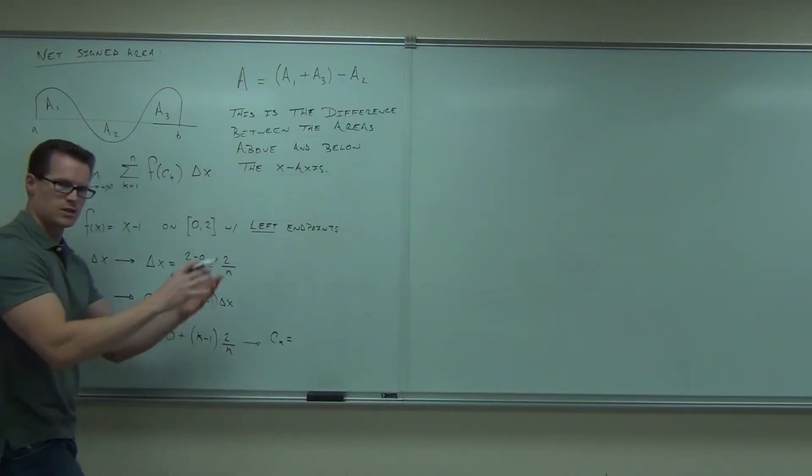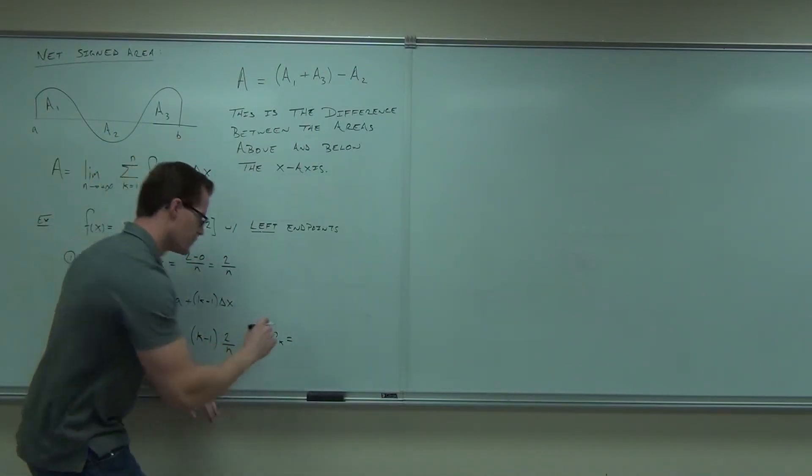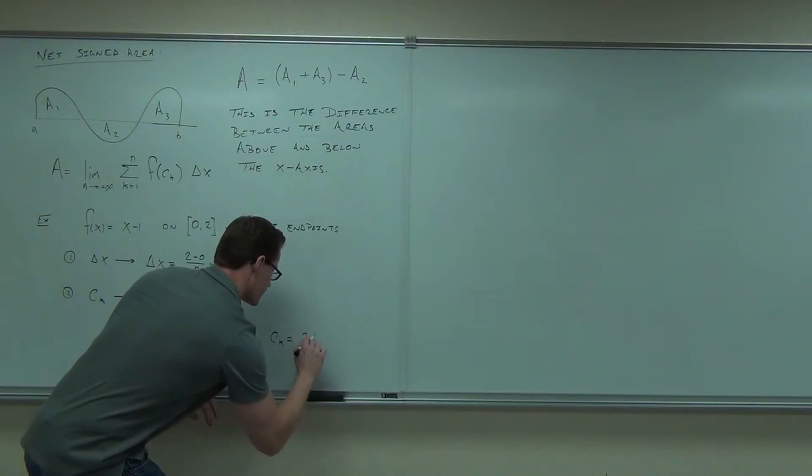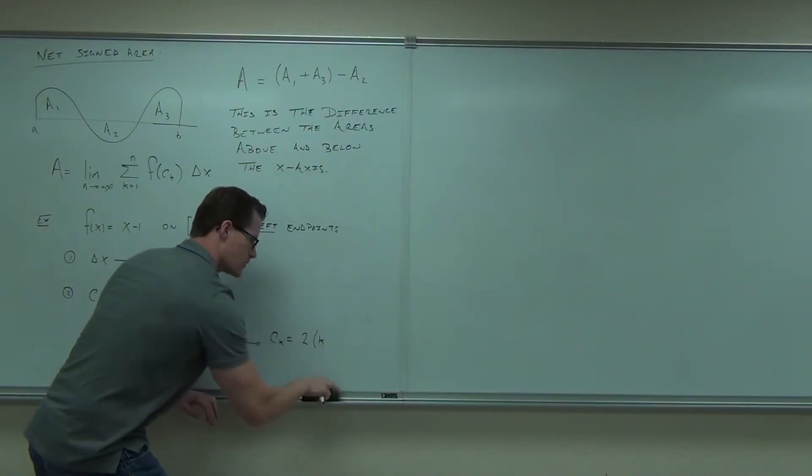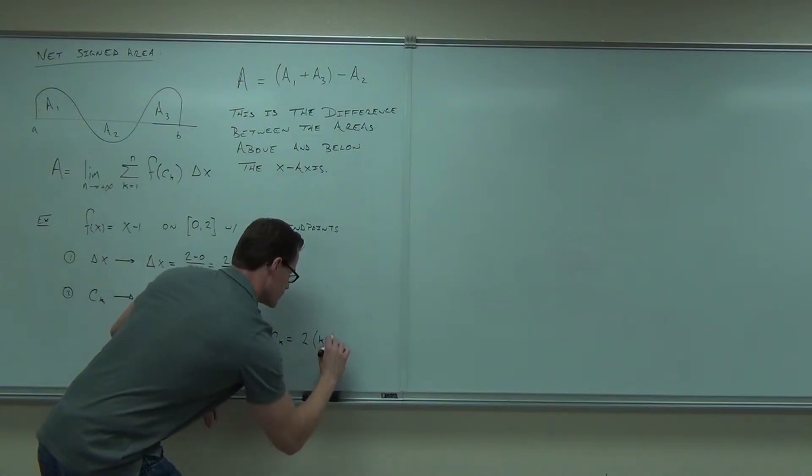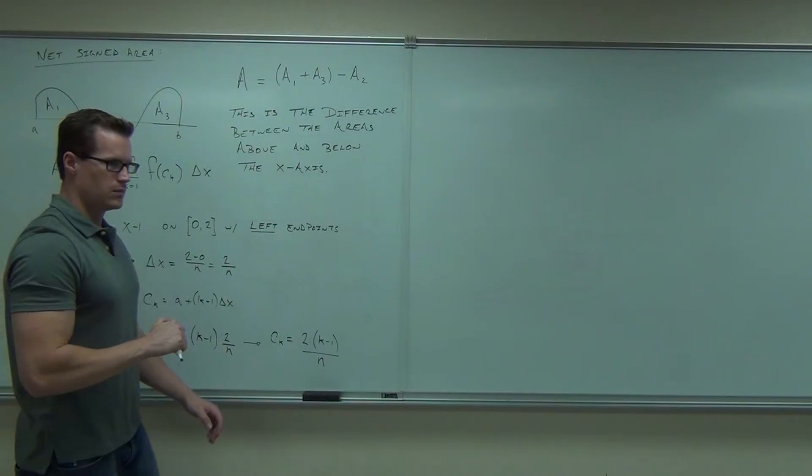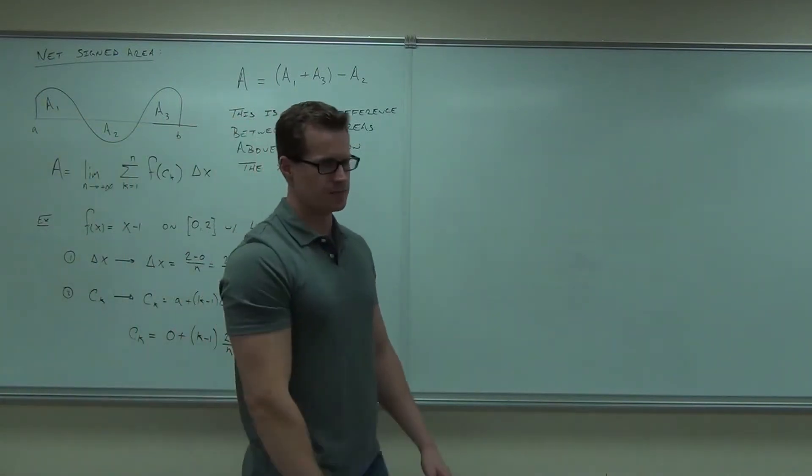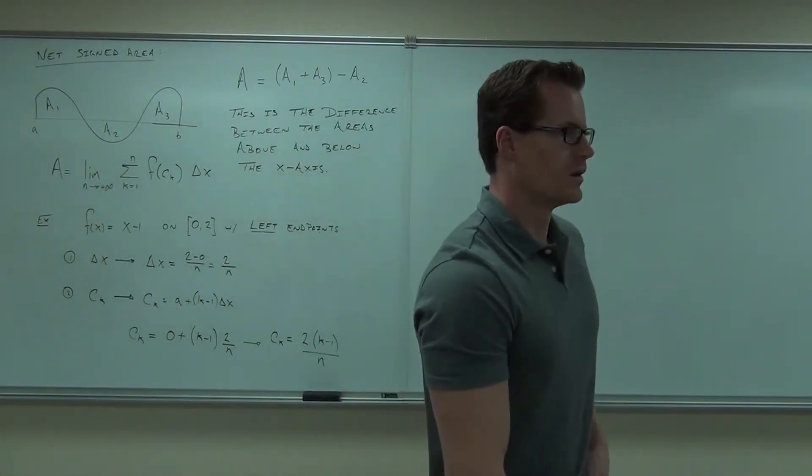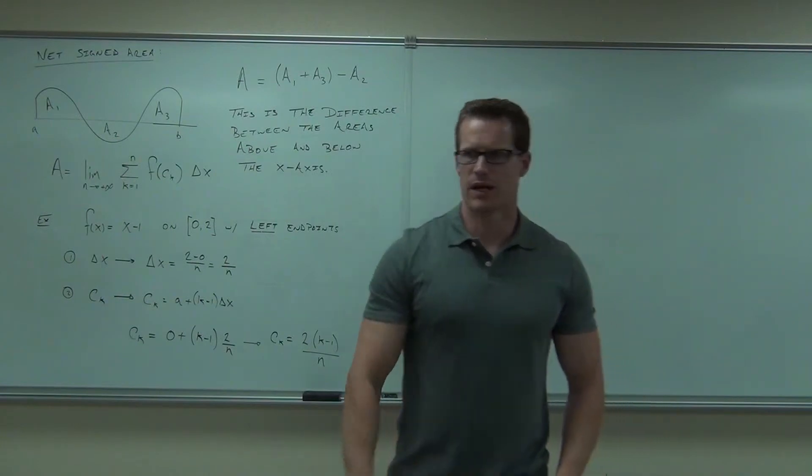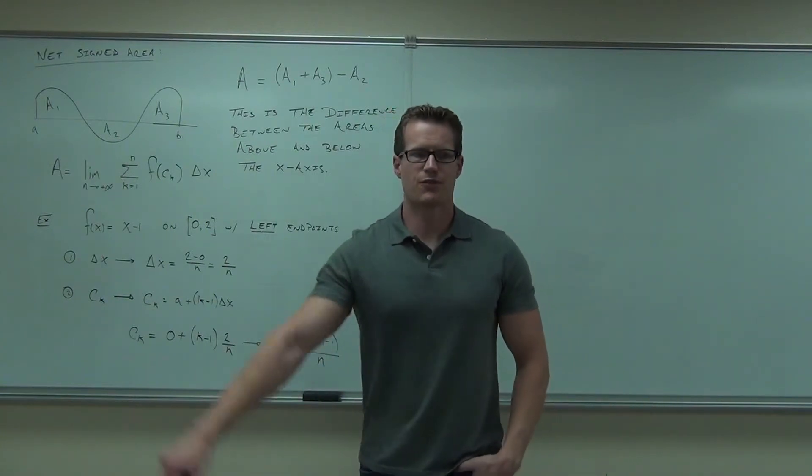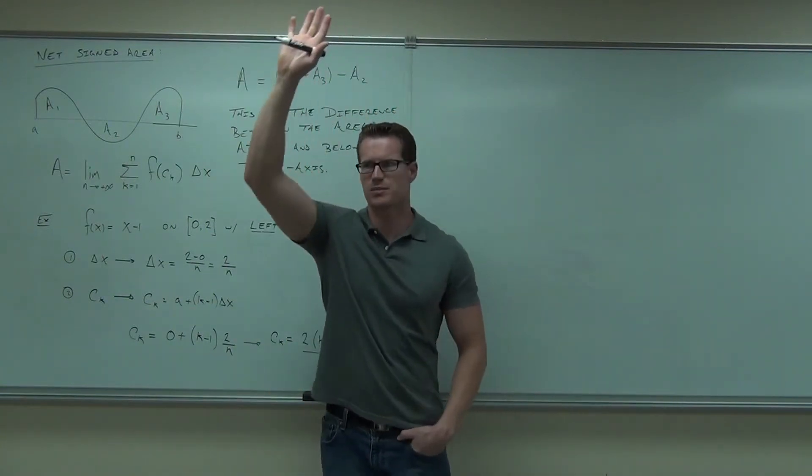So c sub k is 0. 0 does nothing. You have 2(k minus 1). Don't distribute. Over n. Don't distribute, and I'll tell you why later. You're just going to have to refactor it out anyway if you do distribute. Raise your hand if you're okay with this so far. Good deal. Basic right now.